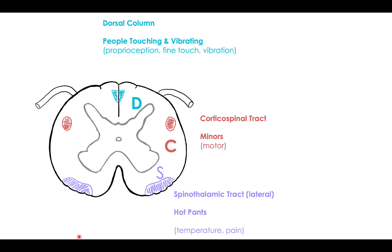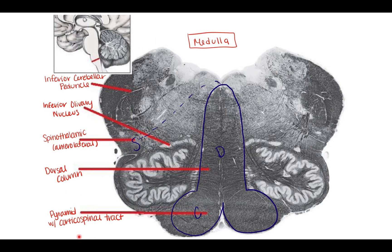So here we have a medulla, and like I said, once you see this you can't unsee it. I put down the different structures like the cerebellar peduncle and olivary nucleus, but in the thousand-plus questions I've done, they always ask about the dorsal column, corticospinal tract, or spinothalamic tract. So what I did here was I drew a dick — I call this my medulla dick, and I'm actually really proud of my medulla dick.